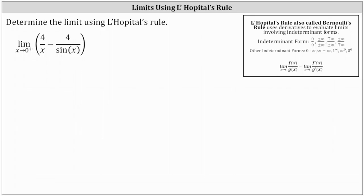We're asked to determine the limit using L'Hôpital's rule. Let's first check the form of the limit. As x approaches 0 from the right, 4 divided by x approaches infinity, and 4 divided by sine x also approaches infinity. Right now, the limit is in the form of infinity minus infinity, which is an indeterminate form, but it is not one of the indeterminate forms where we can apply L'Hôpital's rule.